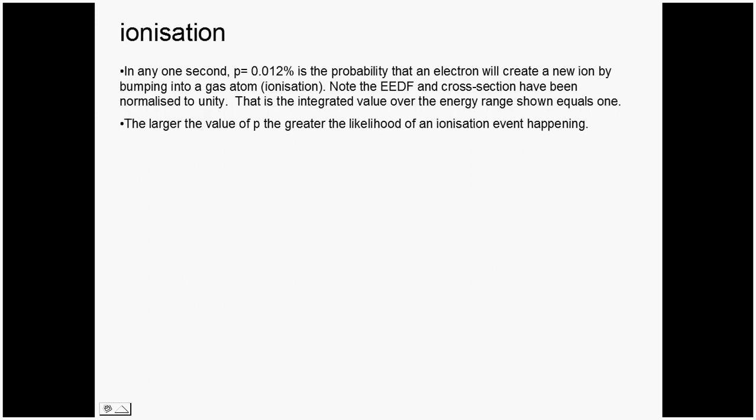The larger the value of p, the greater the likelihood of an ionization event happening. So the bigger the overlap of those two distributions. So if you make the electron temperature hotter, you get more electrons out near the ionization threshold. And so you increase the value of p.